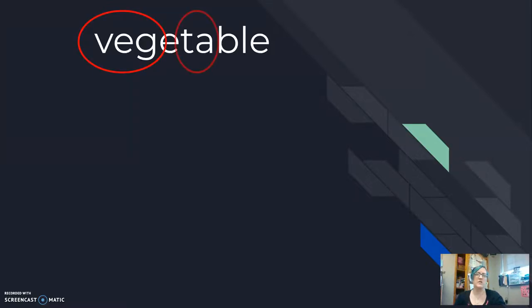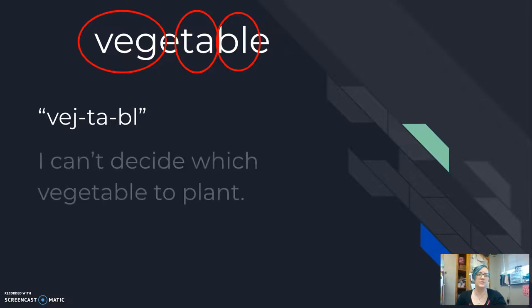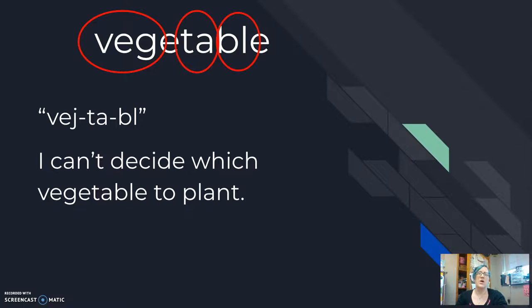However, myself, my common American English pronunciation, I cut this into three pieces and I say veg-ta-ble. I can't decide which vegetable to plant. I really love vegetable soup. Actually, I don't love vegetable soup. My husband loves vegetable soup. Myself? Not so much.